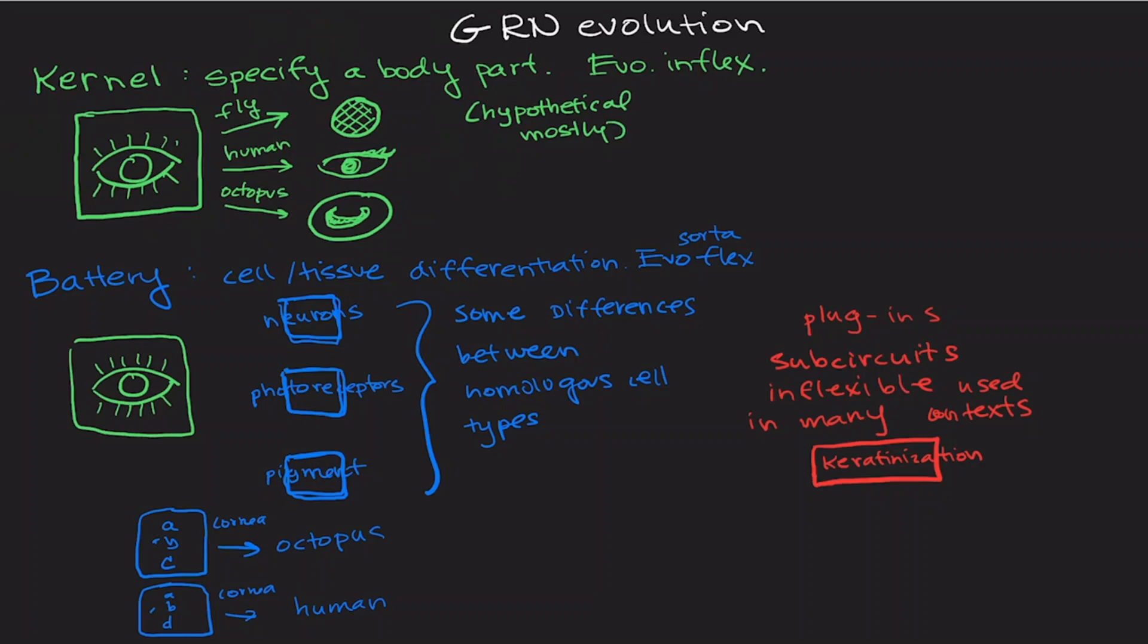Now, this can be used, though, in lots of different contexts. So we can use it to make keratinized skin cells in humans. We can use it to make keratinized hair. And we can also trigger it in this kernel for eye specification. So in places where this eye kernel is active, then we're going to get something like a cornea. So this plug-in for keratinization can be used in lots of different contexts, even though it always has the kind of same output.